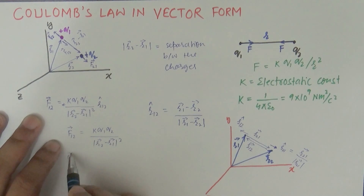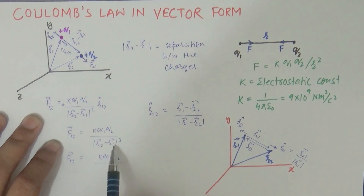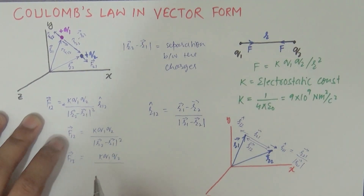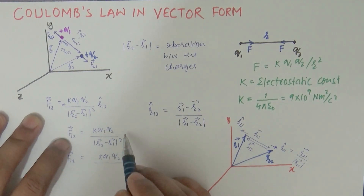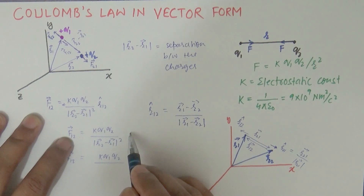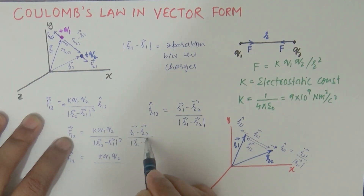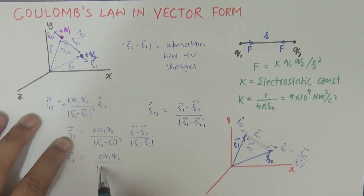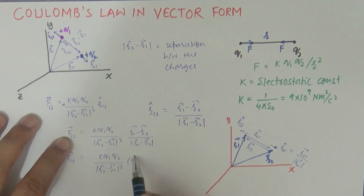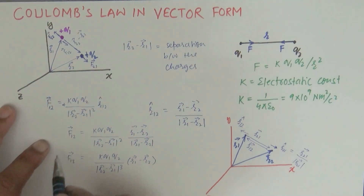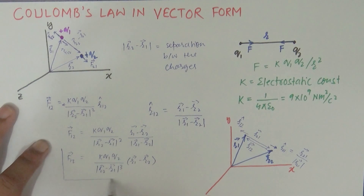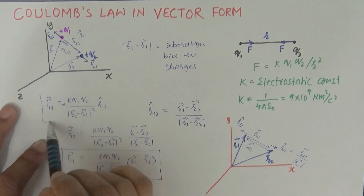Substituting the expression for r12 cap into the force formula, we get f12 equals k·q1·q2 times r1 minus r2, divided by the cube of the magnitude of r2 minus r1. This is because combining the squared magnitude in the denominator with the magnitude from the unit vector expression gives a cube of the magnitude. This is the force on charge q1 due to charge q2 in vector form; alternatively, you can use the simpler form with the unit vector directly.